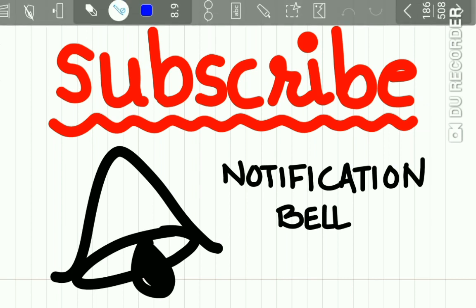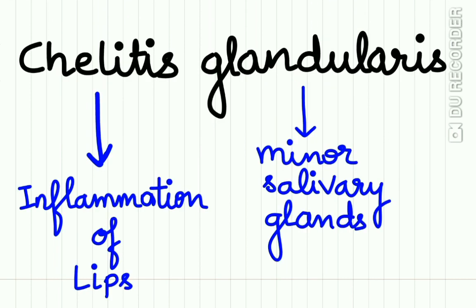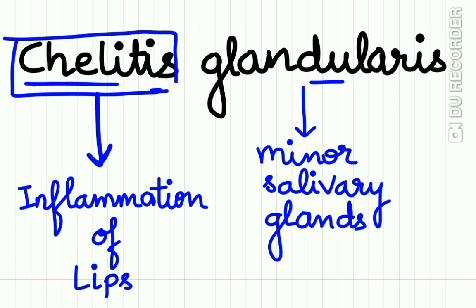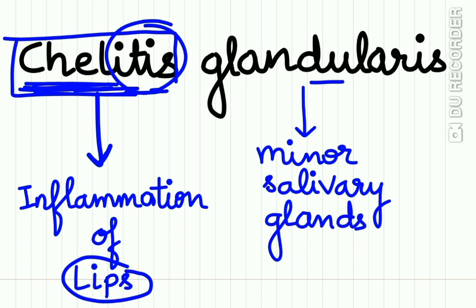To begin with Cheilitis Glandularis: the word 'cheilitis' — 'itis' means inflammation — so cheilitis refers to inflammation of the lips. 'Glandularis' denotes something related to the salivary glands. So Cheilitis Glandularis is the inflammation of the minor salivary glands of the labial mucosa.